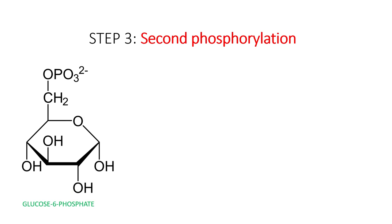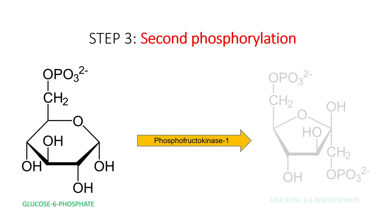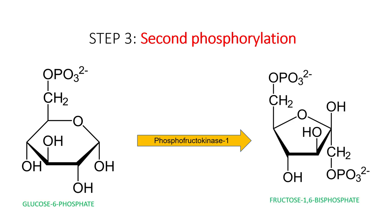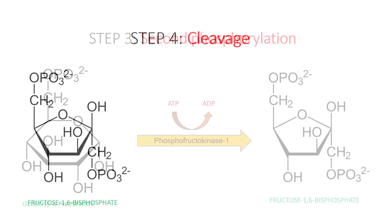In step 3, fructose-6-phosphate is phosphorylated on the first carbon atom to become fructose-1,6-bisphosphate. This reaction is catalyzed by phosphofructokinase-1, and again we need one ATP molecule for this reaction to happen.